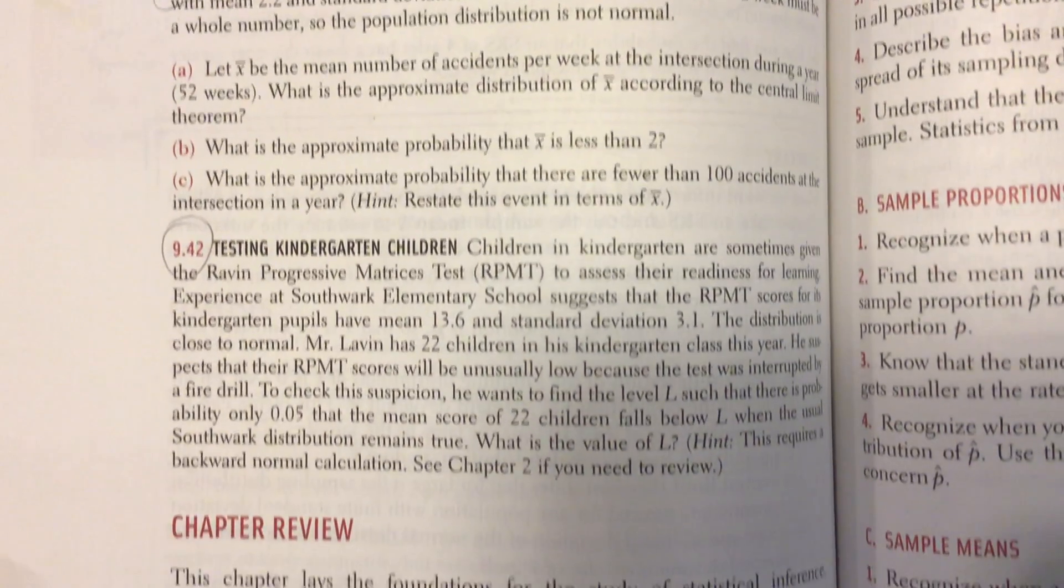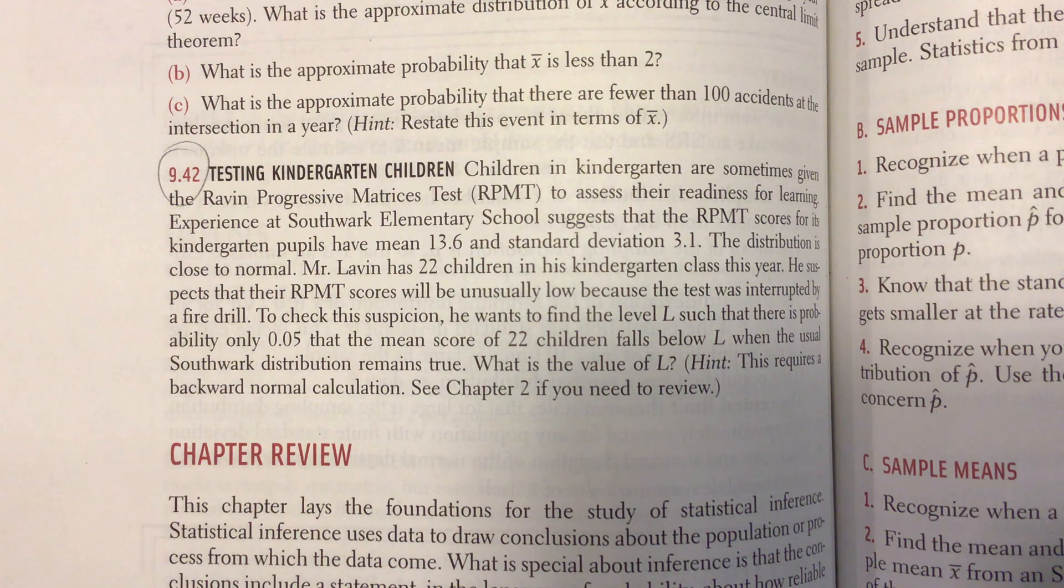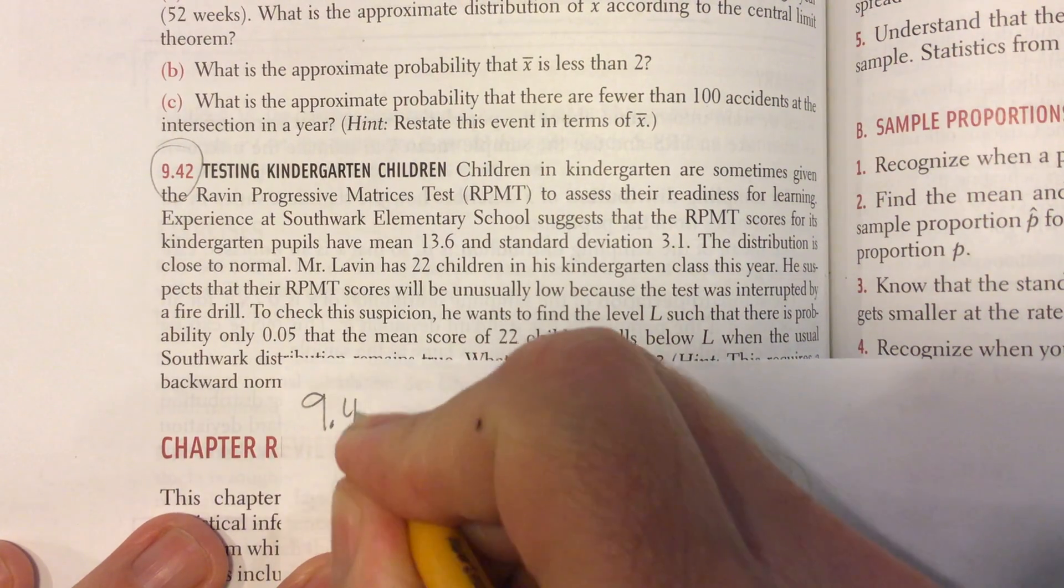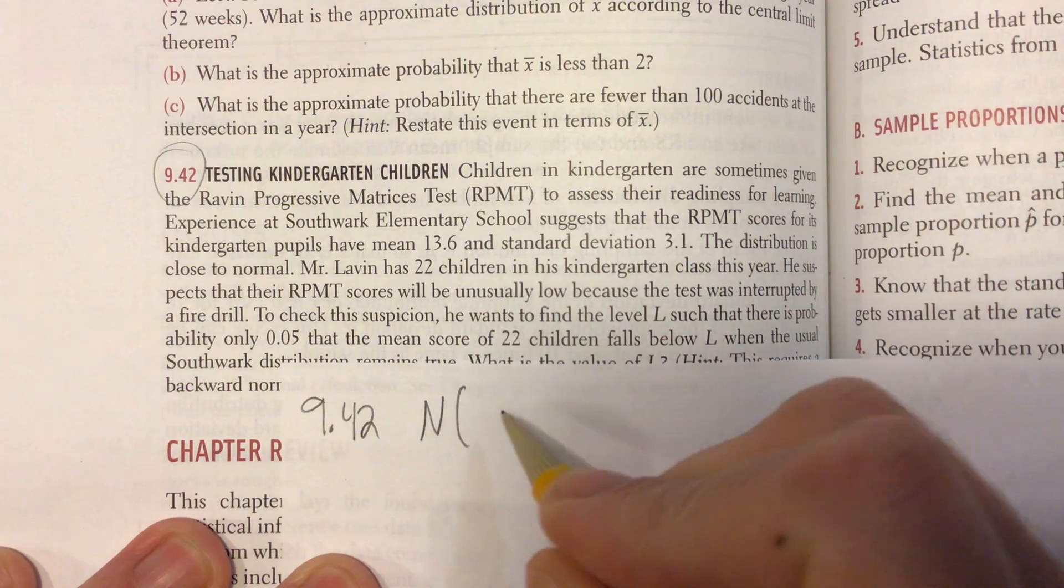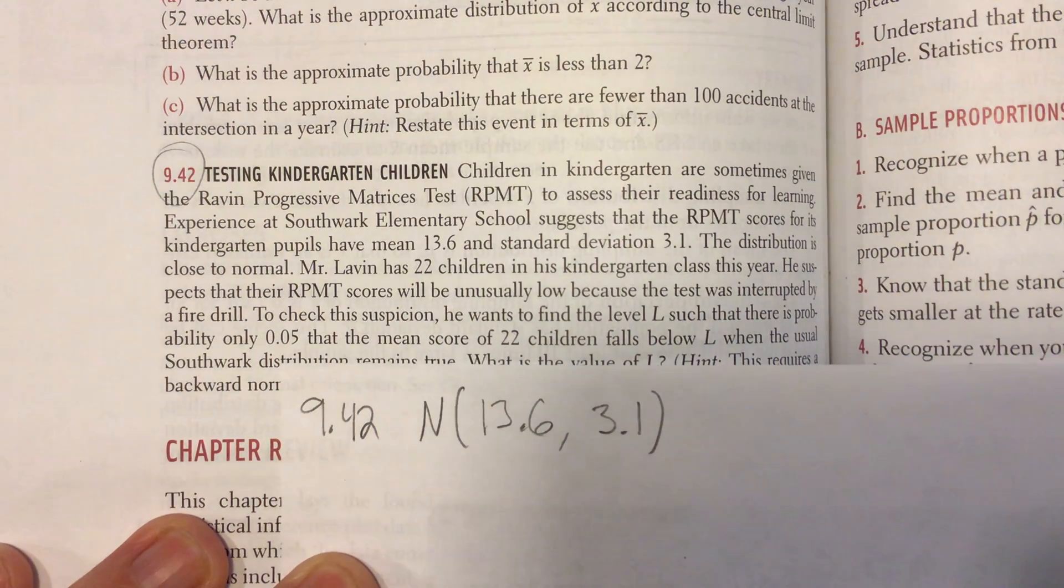Problem 42, last question: Testing kindergarten children. Children in kindergarten are sometimes given the Rabin Progressive Matrices Test to assess their readiness for learning. Experience at Southwark Elementary School suggests that the RPMT scores for its kindergarten pupils have a mean of 13.6 and a standard deviation of 3.1. The distribution is close to normal. So here we go: approximately normal, N(13.6, 3.1).